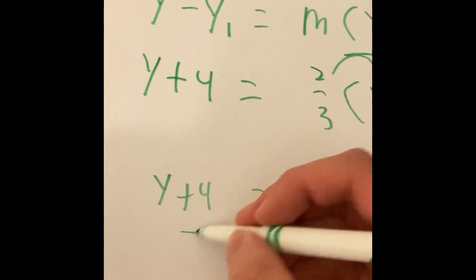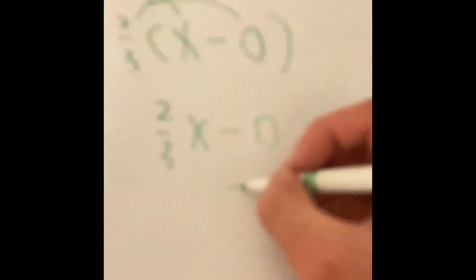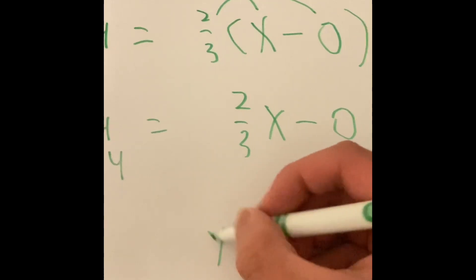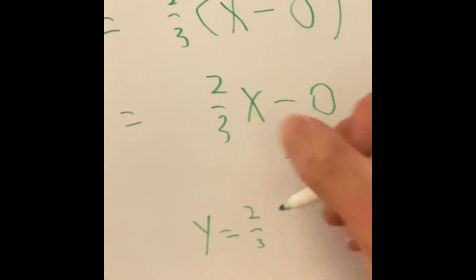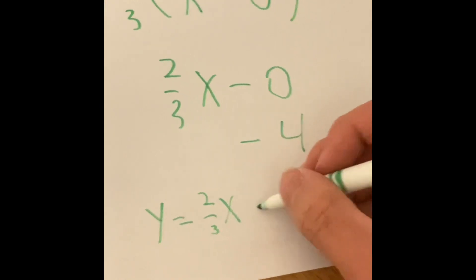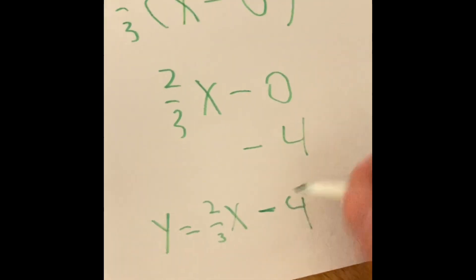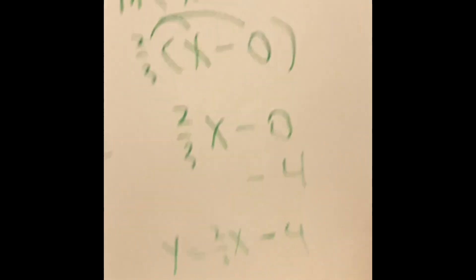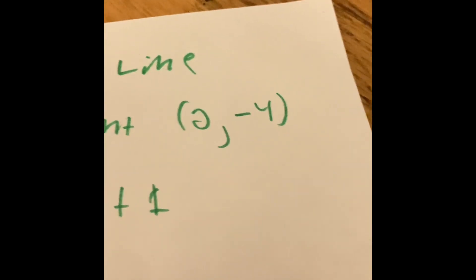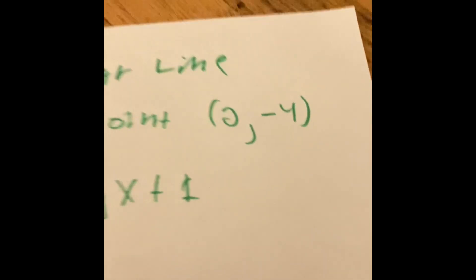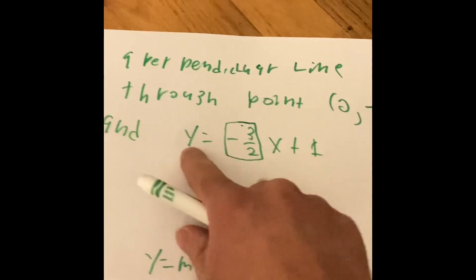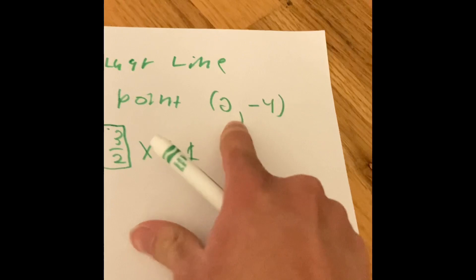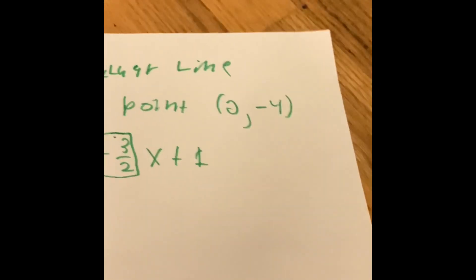We subtract 4 from both sides to isolate y and get slope intercept form. Our answer is y equals 2 over 3 x minus 4. This new slope intercept form also passes through the point (0, -4), so we've made a perpendicular line to y equals negative 3 over 2 x plus 1 that strikes through (0, -4).